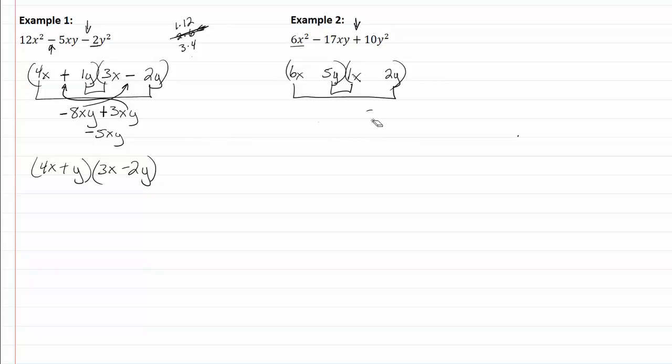Okay, I'm still going to be adding my outside and inside, so I now have 12xy plus 5xy and that's going to give me seventeen.